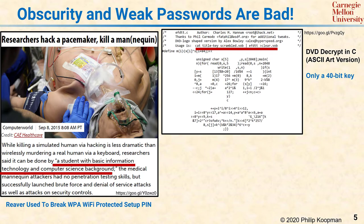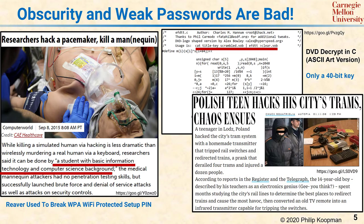In 2008, a 14-year-old boy made a homemade transmitter that was able to operate the switches in his city's tram line. That resulted in derailing four trams and multiple injuries. He made his transmitter by converting an old TV remote to be compatible with the train system.